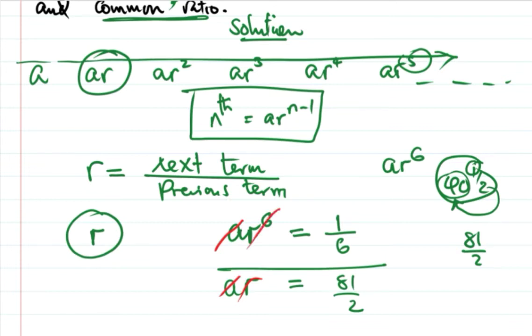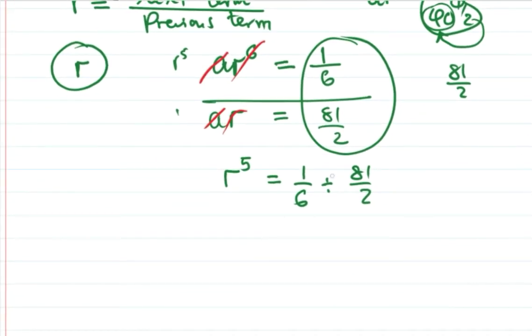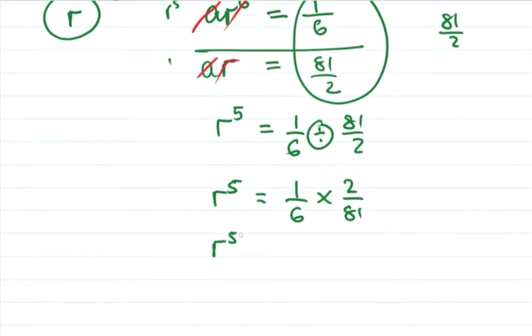When we divide ar⁶ by ar, the a cancels and we're left with r⁵. So r⁵ equals ⅙ divided by 81/2. When you divide, you inverse this, so r⁵ equals ⅙ multiplied by 2/81. That gives us r⁵ equals 1/3 times 2/81.